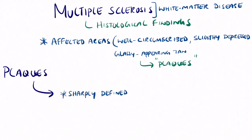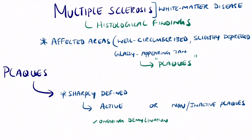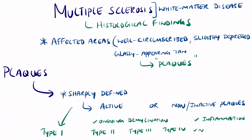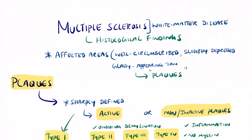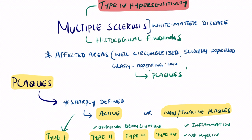These plaques can be classified into two categories: active and inactive. The active phase consists of four different types — type 1, 2, 3, and 4 — with ongoing demyelination visible on histological slide. In inactive plaques there is only inflammation with no ongoing demyelination. Multiple sclerosis is a type 4 hypersensitivity autoimmune condition, and it usually leads to an irreversible, progressively worsening condition over time.